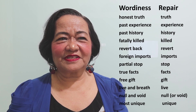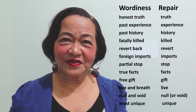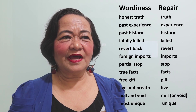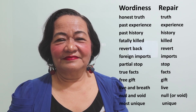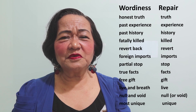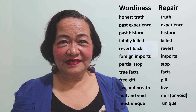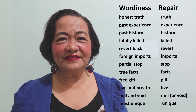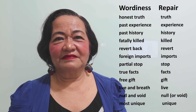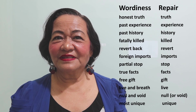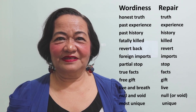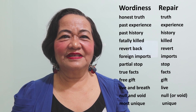Then 'foreign imports' — when you import, it is from a foreign land, so just say 'import.' Then 'true facts' — once it is a fact, it is true, so it's enough to say 'facts.' 'Free gift' — if it is a gift, it is for no cost, so 'gift' should be used.